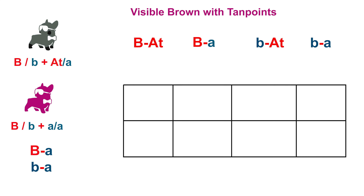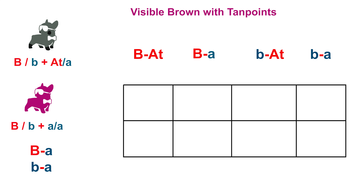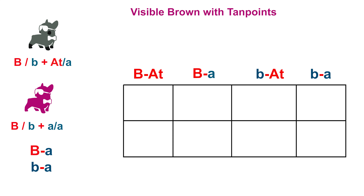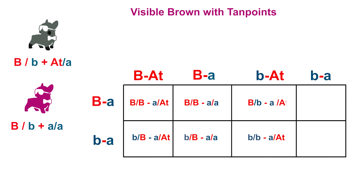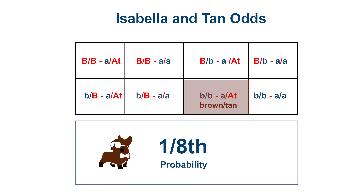We're going to make a Punnett square of four rows and two columns. We'll take all of dad's possible arrangements and fill them along the top, then do the same for mum on the side. We'll fill everything in the same way we did with our simple Punnett square and determine the odds of these combinations occurring. We'll find that the gene pairing we're looking for — bb, AT/A, which is a brown dog with tan points — occurs one out of eight times. Expressed as a percentage, we have a 12.5% chance of this gene pair occurring.